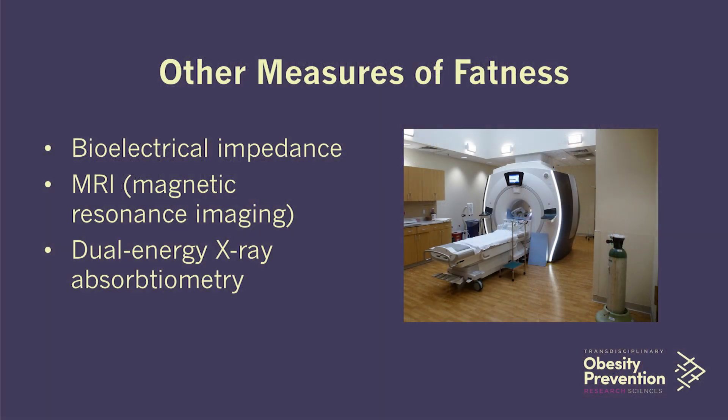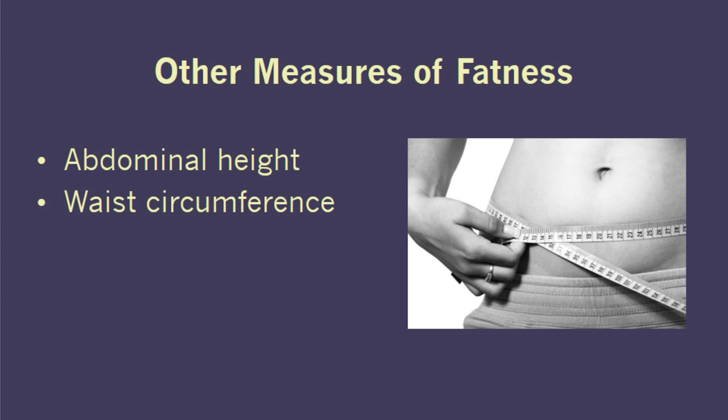Other instruments can measure the total fat in the body, including bioelectrical impedance, magnetic resonance imaging, or dual x-ray absorptiometry. Unfortunately, many of the instruments used to measure body fat directly are very expensive and are only used in the research setting. Another way to assess obesity is to measure body fatness in particular regions in the body. Measuring fat in the abdominal region is particularly informative because having too much fat in the abdomen is detrimental. We can measure waist circumference or the height of the abdominal area — these two measures are cheap and easy to do in the clinic and can provide important information about a person's risk of disease from obesity.